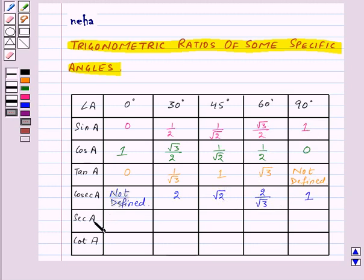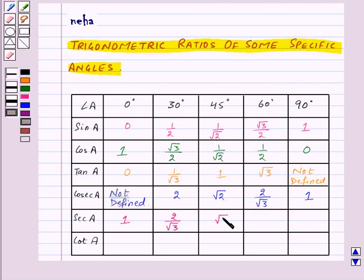Now we need to find the values of secant A, which is the reciprocal of cos A. So sec 0° = 1/1 = 1. sec 30° = reciprocal of √3/2 = 2/√3. sec 45° = reciprocal of 1/√2 = √2. sec 60° = reciprocal of 1/2 = 2. And sec 90° = reciprocal of 0 = 1/0, which is not defined.